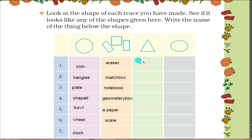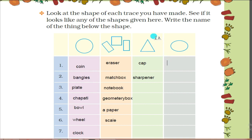Now here this is the shape of a triangle. Which things, if you trace, will give a triangle shape? Things like a cap and sharpener will give a triangle shape trace. And here this is oval shape - which thing if you trace will give oval shape? Potato will give an oval shape trace and egg will also give an oval shape trace.